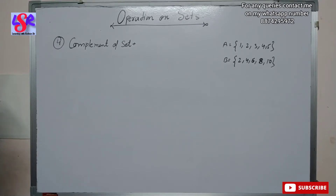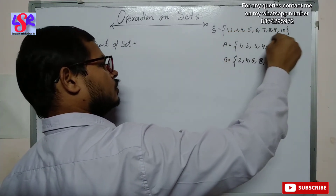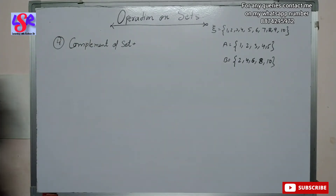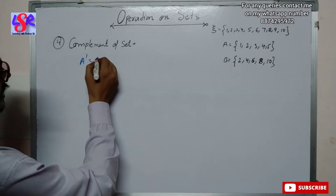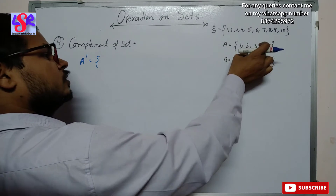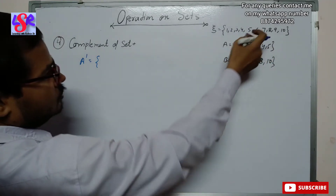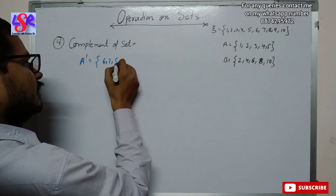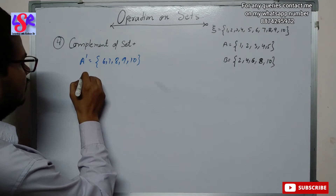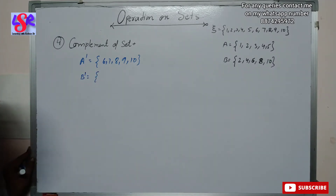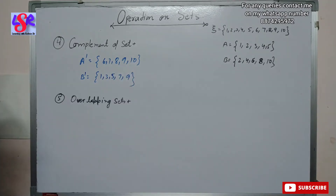The next one is complement of a set. For complement, we need a universal set. Let the universal set contain numbers from 1 to 10. For the complement of A, we write a dash above A. We write all terms present in the universal set but not in A. Since A has 1 to 5, A complement = {6, 7, 8, 9, 10}. For B complement, we write all terms not present in B: {1, 3, 5, 7, 9}.